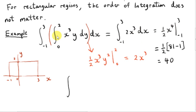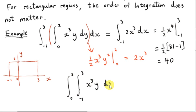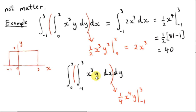Now let's reverse the order of integration. We reverse the differentials, so our inner integral becomes an integral with respect to x. We're integrating x cubed y from x equals minus 1 to x equals 3, treating y as a constant in this integral. Integrating x cubed gives us a quarter x to the 4, multiplied by y.